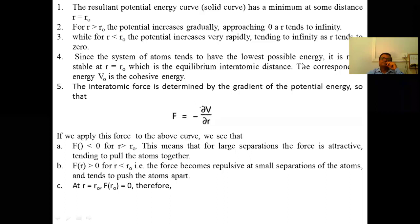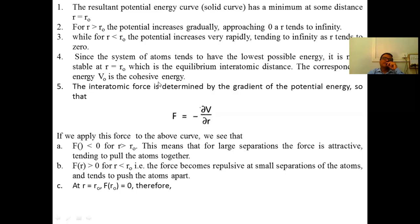The molecule is stable at R = R₀. This is called the equilibrium position. The corresponding minimum energy is V₀, which is called the cohesive energy. The cohesive energy is the energy required to separate the atoms from the molecule — to break the molecule. V₀ is the cohesive energy.